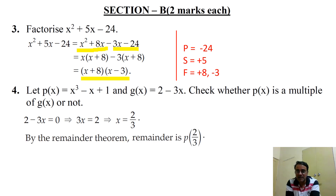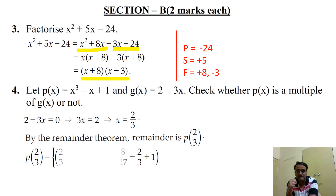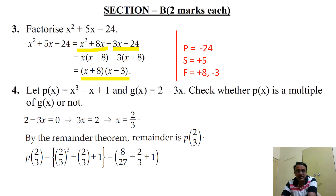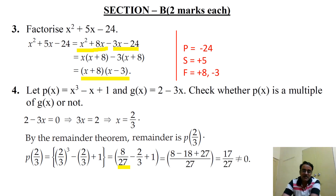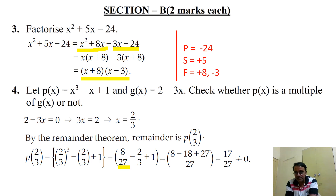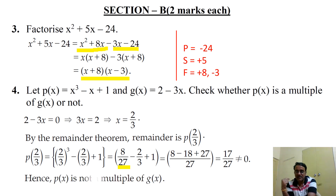By the remainder theorem, the remainder equals p(2/3). We substitute x = 2/3 in the polynomial: (2/3)³ = 8/27, minus 2/3, plus 1. Taking LCM and simplifying, the result is not equal to 0. Therefore p(x) is not a multiple of g(x).